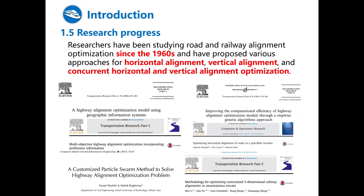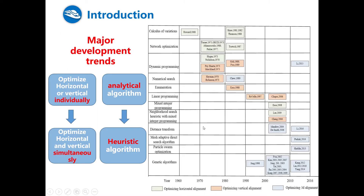In the literature, many studies have been done since the 1960s. Many methods for horizontal, vertical, and three-dimensional alignment design have been proposed. Here are some examples. The major development trends in the existing studies are from optimizing horizontal or vertical alignment individually, to optimizing three-dimensional alignment simultaneously.